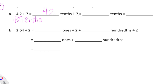42 tenths divided by 7 — well, I know 42 divided by 7 is 6, so 42 tenths divided by 7 is equal to 6 tenths. And then the final answer space is just for standard form.